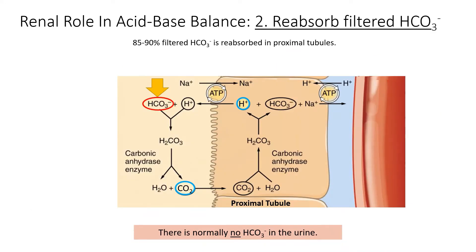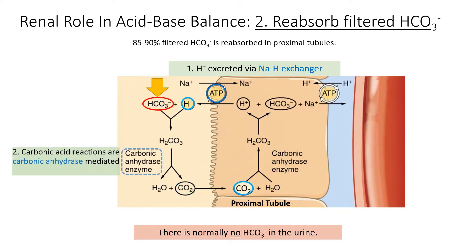Another important renal role in acid-base balance is the reabsorption of filtered bicarbonate. 85 to 90% of filtered bicarbonate is reabsorbed in the proximal tubules. First, the hydrogen ion is excreted via the sodium-hydrogen exchanger. This pairs with bicarbonate in the urine, and the carbonic acid that is formed undergoes reactions mediated by the carbonic anhydrase enzyme.